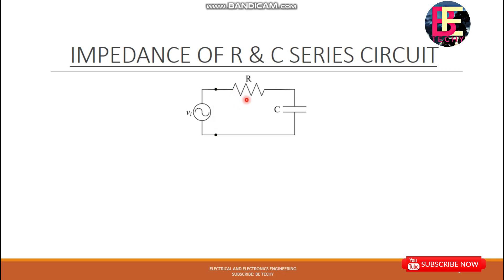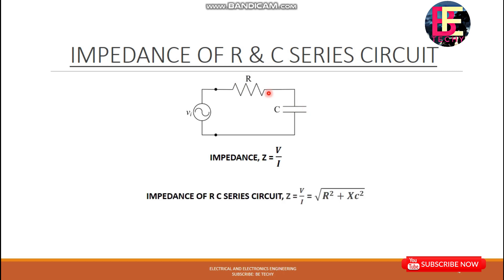Now we have voltage in the R and C series. That is how the impedance is. The basic equation is Z equals V by I. We have to do the vector addition for the R and C voltage to derive the equation. Z equals √(R² + XC²).